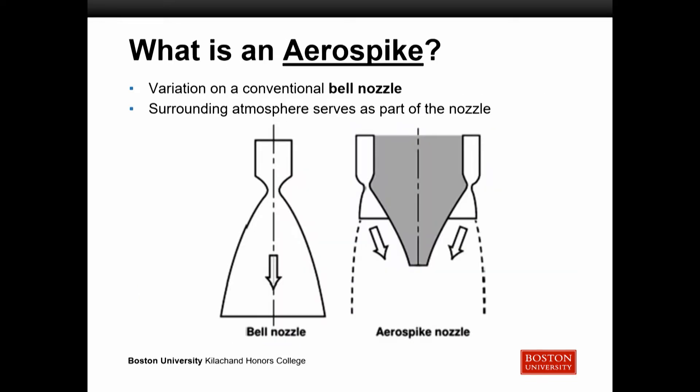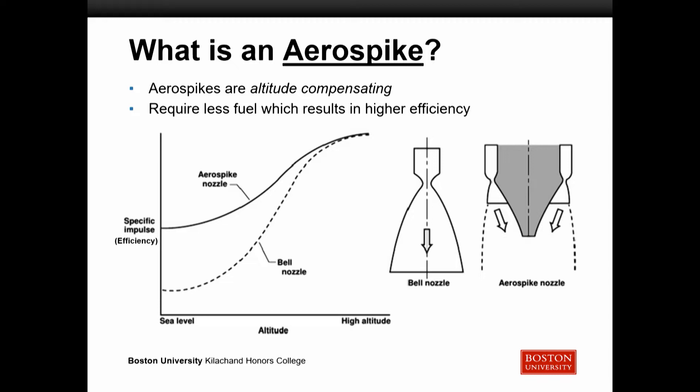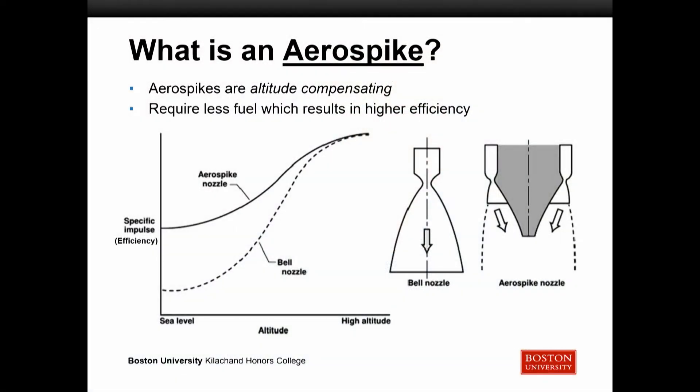So what is an aerospike? An aerospike is essentially just a variation on a conventional bell nozzle. Rather than having a metallic bell doing the expansion, you're firing the exhaust onto a spike, and the atmosphere around the nozzle serves as the expansion part. This means that aerospikes are altitude compensating — they require less fuel, which results in higher efficiency. As we go up in altitude, air pressure goes down, and in the bell nozzle case you lose a lot of performance, but with the aerospike you don't have those losses.